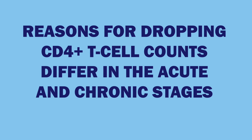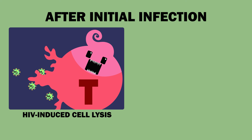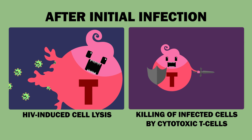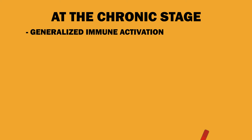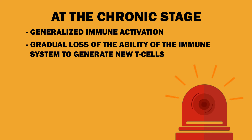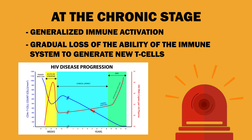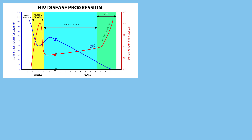Reasons for dropping CD4-positive T-cell counts differ in the acute and chronic stages. After initial infection, T-cell depletion results from HIV-induced cell lysis and the killing of infected cells by cytotoxic T-cells. However, at the chronic stage, generalized immune activation combined with the gradual loss of the immune system's ability to generate new T-cells results in a slow decline in T-cell numbers. And now we come to the final stage of HIV infection: AIDS.